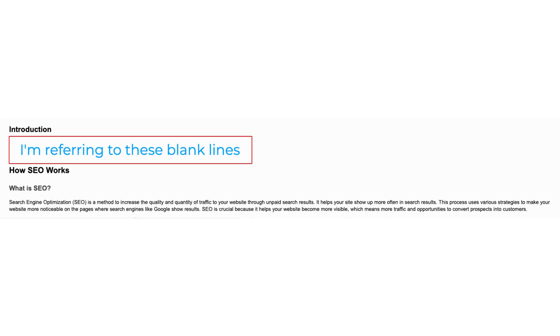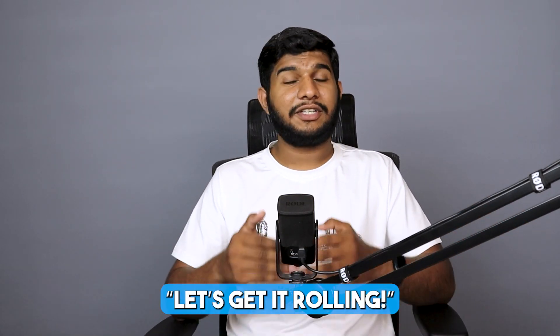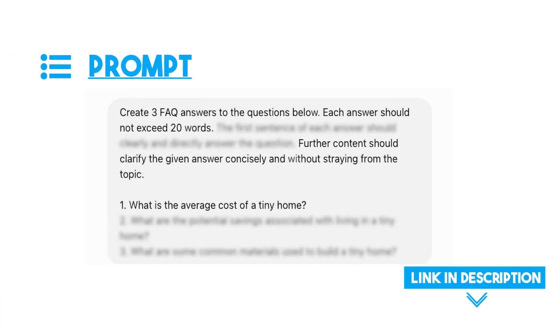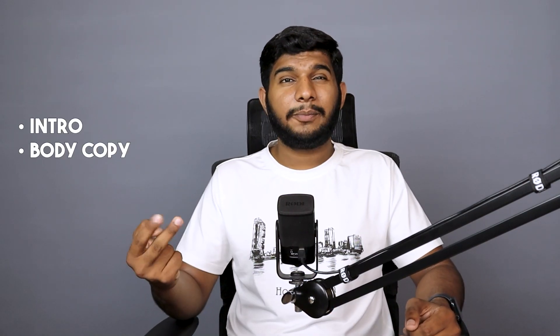Just like with the conclusion, you can use Claude AI to write the intro using a specific prompt. One important thing when using this prompt with Claude: make sure that while pasting the article, you have the heading for introduction and intentionally leave two blank lines after it to better instruct Claude on where you want the intro. To transition from intro to body copy, use something like 'let's get it rolling' or a similar phrase to indicate the intro is finished.